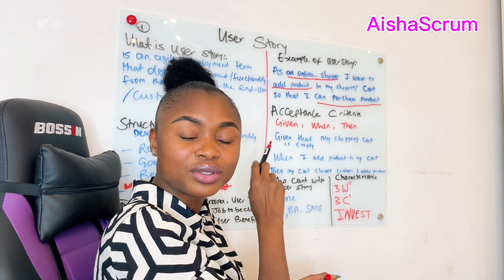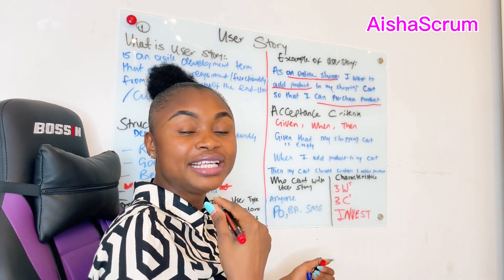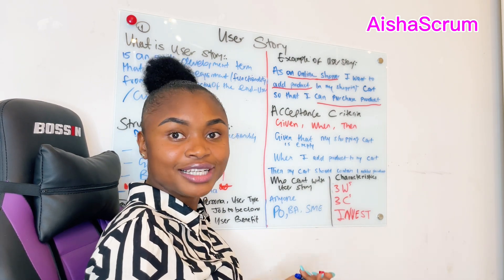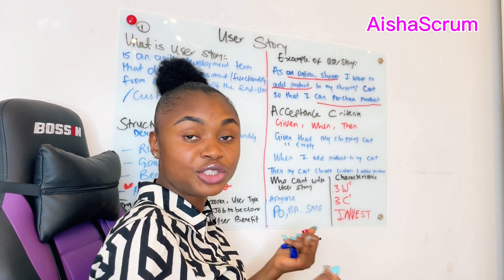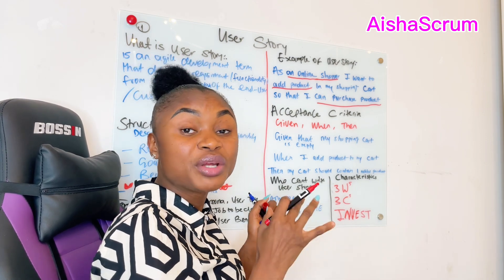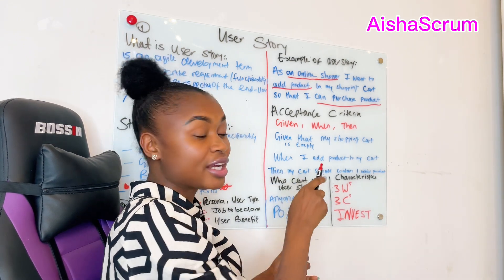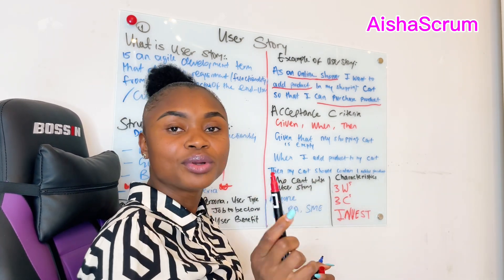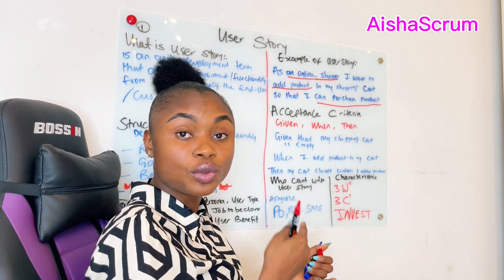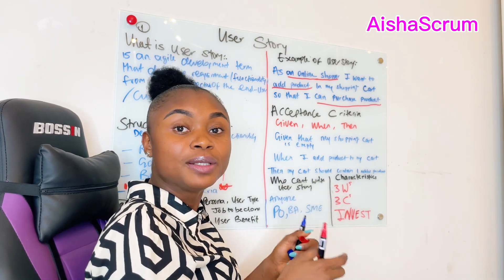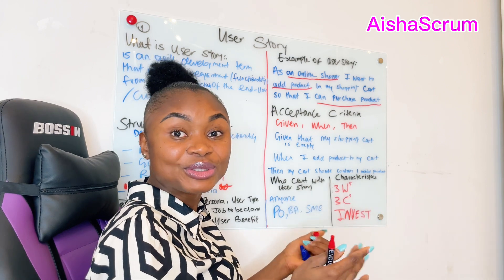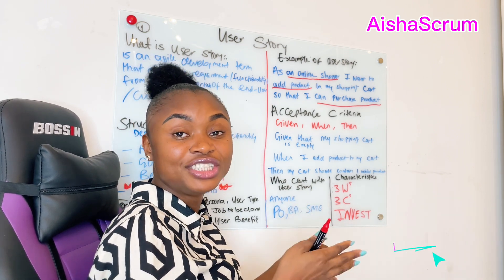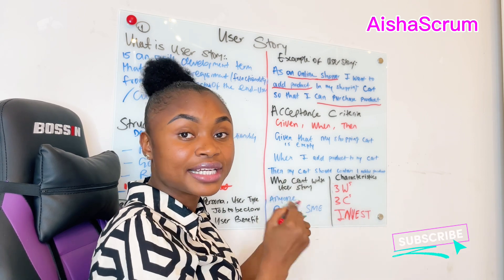We are telling engineers what the end user wants — the what and why — and also what the end product should look like. If we can accomplish all of that based on the given criteria, then we have our increments. For the online shopper example: 'Given that my shopping cart is empty' — when they start shopping, there should be nothing in the cart, and the engineer creates that functionality. 'When I add a product to my cart' — the engineer builds that add-product action. 'Then my cart should contain one added product' — not multiple products, just that one. If the customer can do this on their online shopping site, the job is done. The engineer successfully completed the work. That's why acceptance criteria is very, very important.